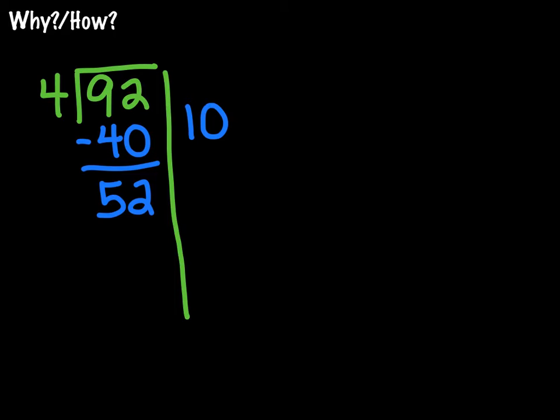So I can think about what number times 4 is close to 52 or doesn't go over. I could do 9, which of course 9 times 4 gives me 36, and when I subtract that out, I get 16.